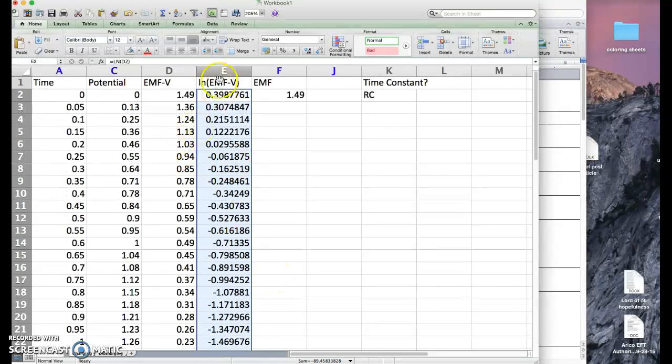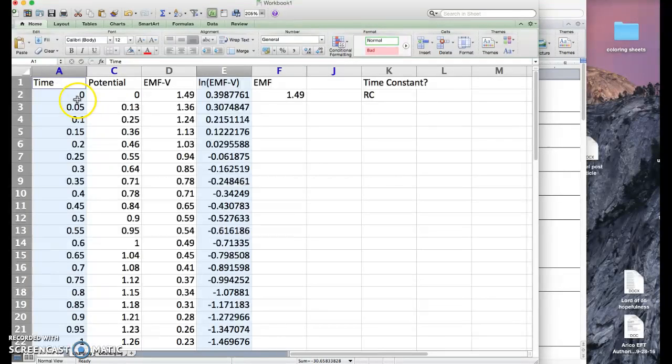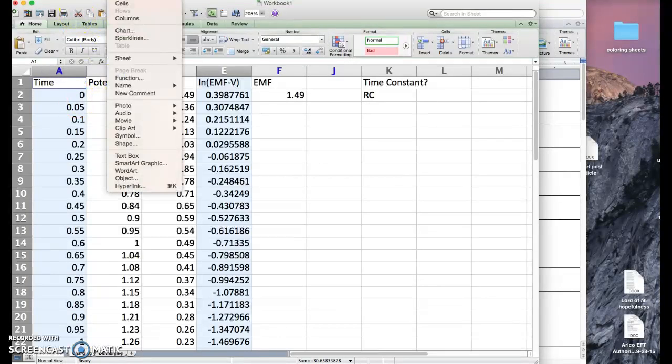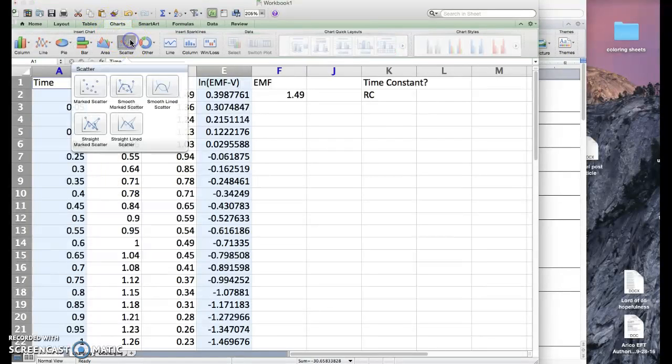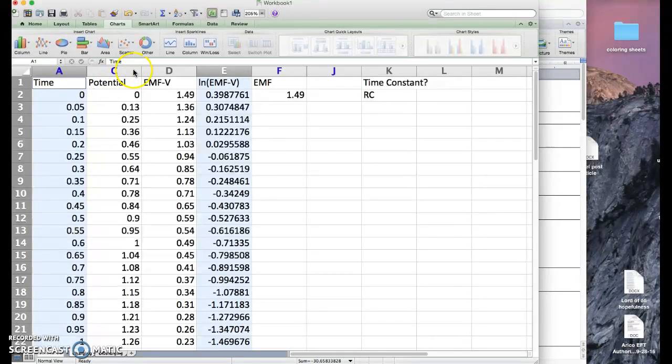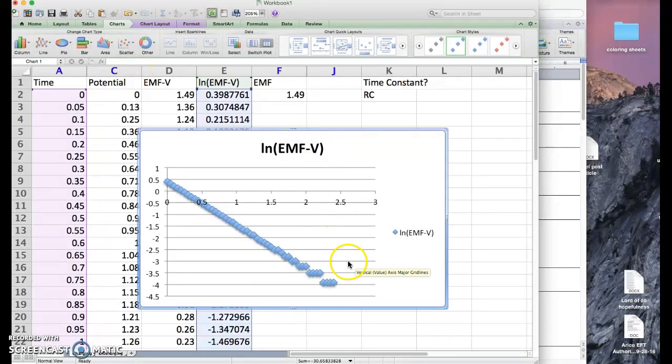Now we just need to make a graph of this versus time. Let's see, insert, charts, scatter plot. We want a marked scatter. Oh, there we go. That's pretty good looking.